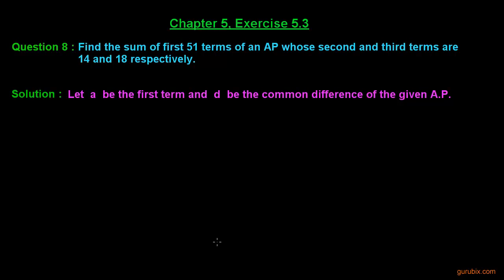Let us solve question number 8 of exercise 5.3 of chapter 5. This question says find the sum of first 51 terms of an AP whose second and third terms are 14 and 18 respectively.